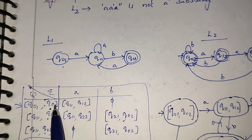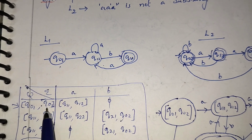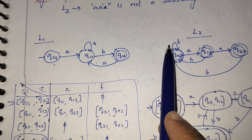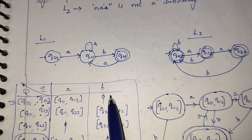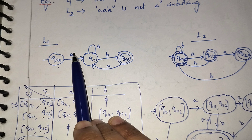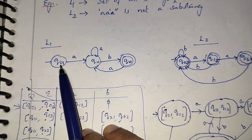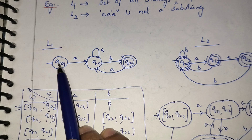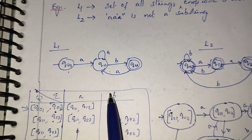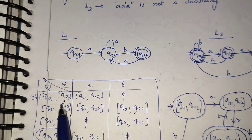When Q01 sees B it goes nowhere (phi), and Q02 on B goes to Q02, but phi intersection Q02 is phi. If a particular state on a particular input symbol is not going anywhere, then there is no need to check the other DFA — because it is intersection. Q01 on B is not shown, so no need to check further; phi intersection anything becomes phi.